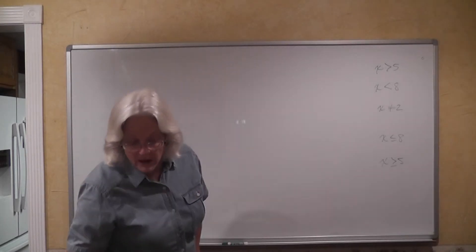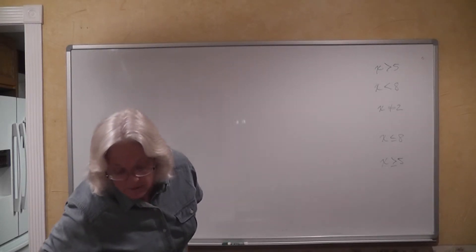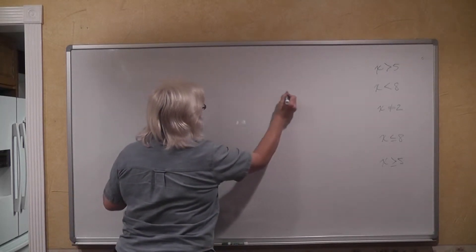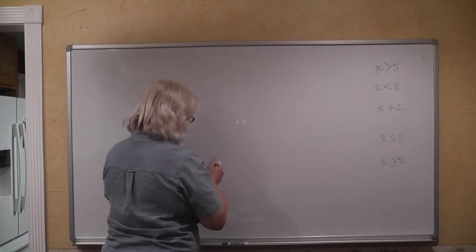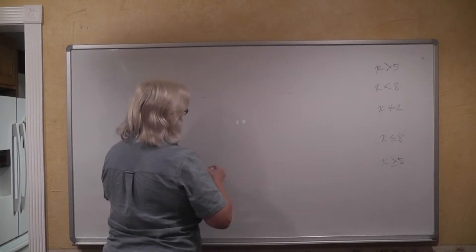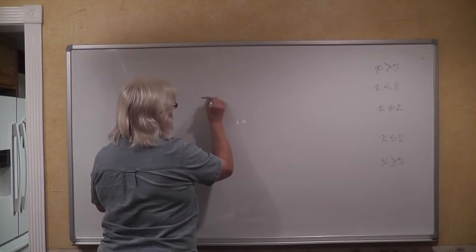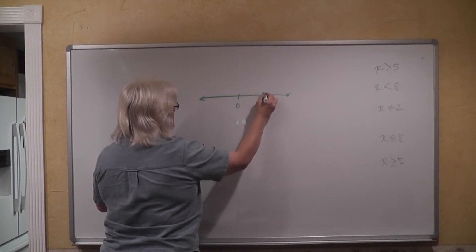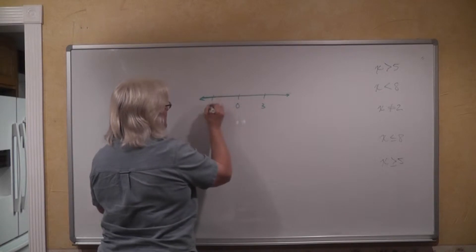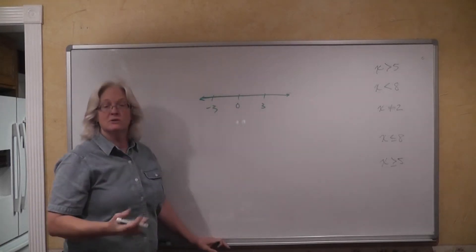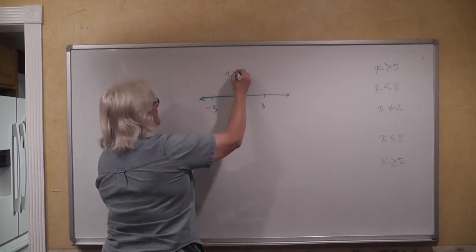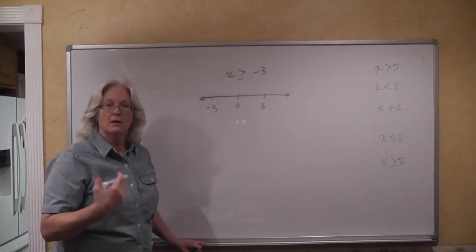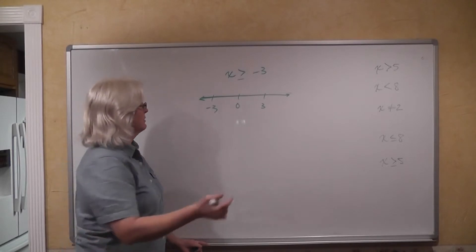If we want to graph them — they ask us to graph x is greater than or equal to negative three. So we have this number line here where I have negative three, zero, and three, and we want to graph x greater than or equal to negative three.